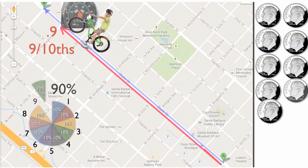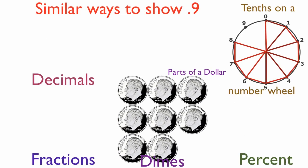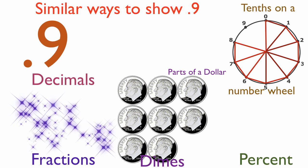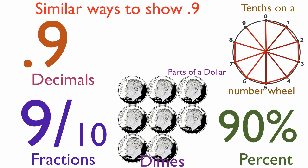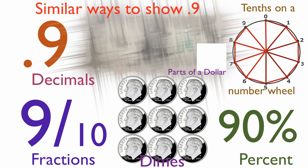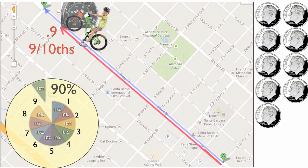Chris goes forward another block and picks up a ninth dime. He's almost there. Chris has gone 0.9, or nine-tenths, or 90% of a mile, or to nine on the number wheel, and now has nine dimes, and has nine-tenths or 90% of a dollar.